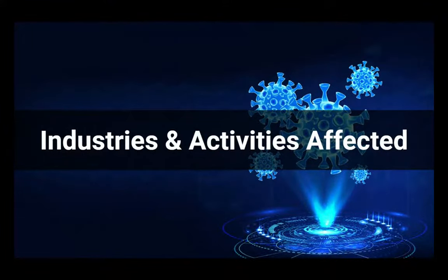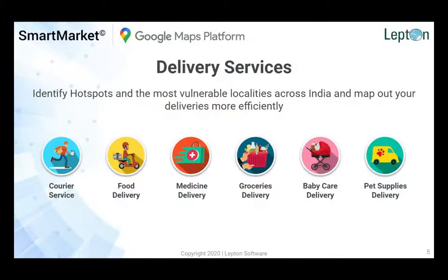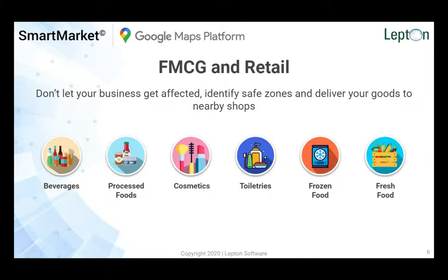With COVID-19 in place, a lot of industries have been impacted and various activities have been affected. We have seen delivery services being impacted — whether courier services, food delivery, medicine, which is quite crucial, grocery as part of essentials, baby care, and pet supplies — all these deliveries are being managed very differently from what we were used to. Similarly, the FMCG and retail industry is managing this very differently. There are containment zones and red zones, and planning business around these zones is very tough because there is a lot of demand but supply is being managed under very different constraints.